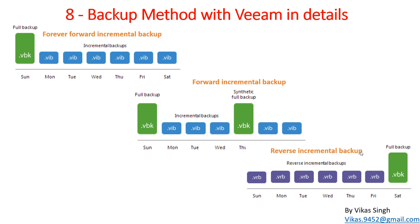The last backup type available in Veeam is reverse incremental backup. With six restoration points, the latest restoration point is always a full backup and all older restoration points are reverse incremental backups. If you want to restore, it runs from the full backup and then applies reverse incremental backups up to the desired restoration point.